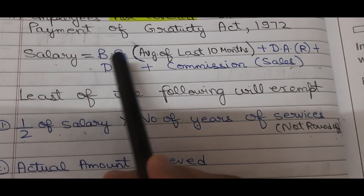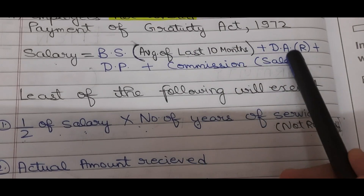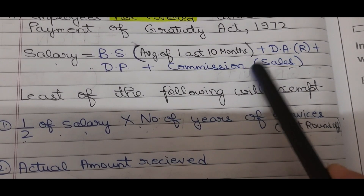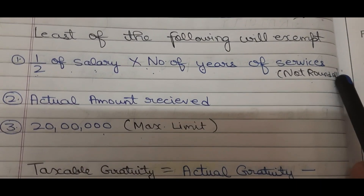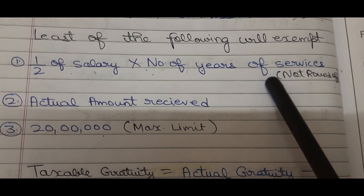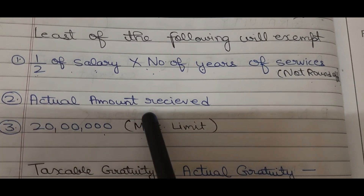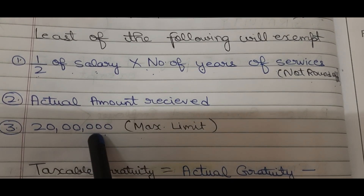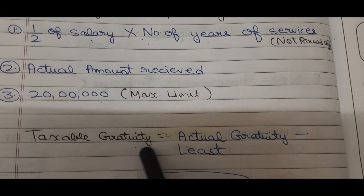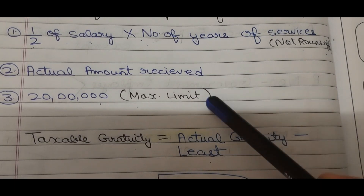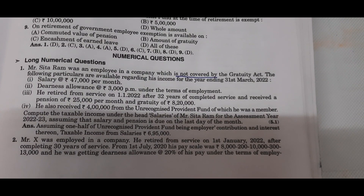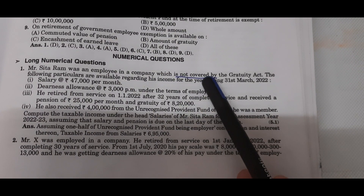First of all, we calculate the basic salary — average of 10 months — plus DA (retirement), plus DP, plus commission on sales. Then the least of the following will be exempt: half into salary into number of years of service (no round-off), or the actual amount received, or 20,000,000 (maximum limit). The taxable gratuity equals actual gratuity minus the least of those three.